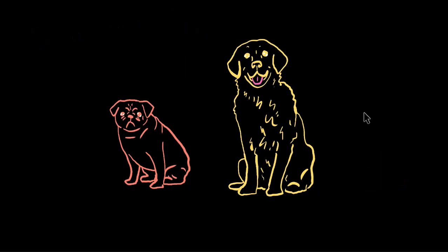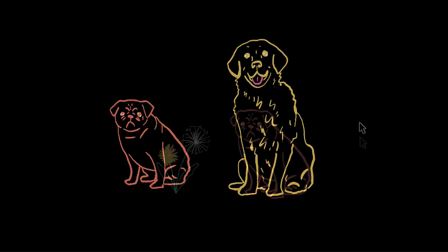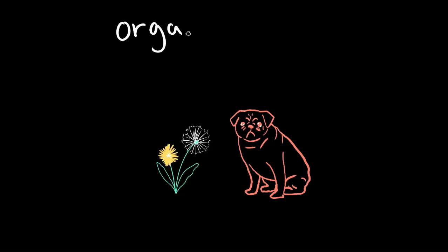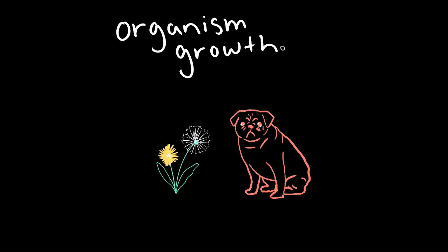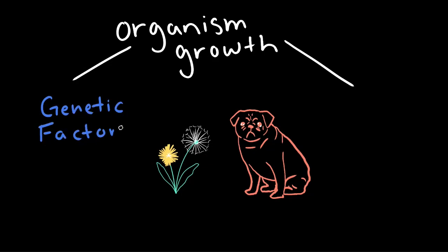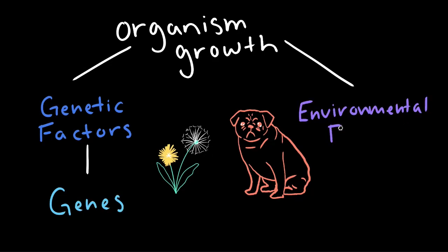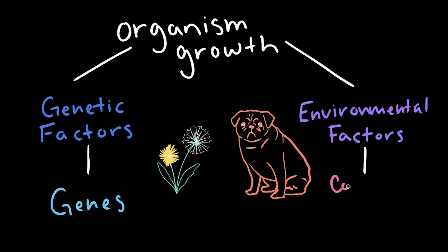And now you know how organisms are influenced by genetics and their environment when it comes to growth and development. Let's do a quick review of what you've learned today. There are two main factors that influence an organism's growth: genetic and environmental factors. Genetic factors are the genes the organism gets from its parent or parents, while environmental factors are the conditions an organism is exposed to as it grows.